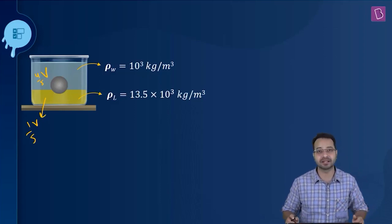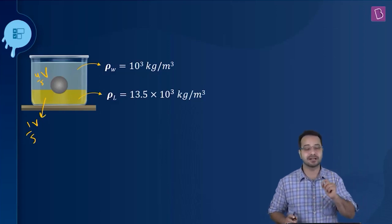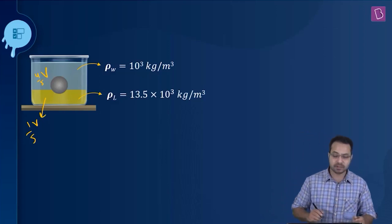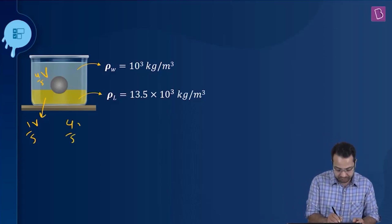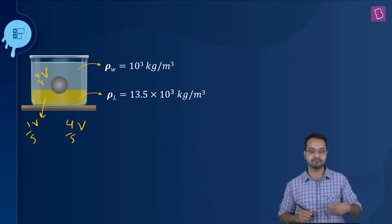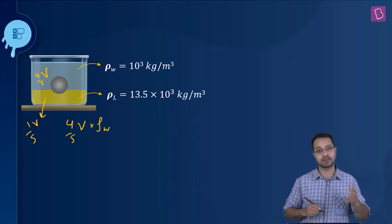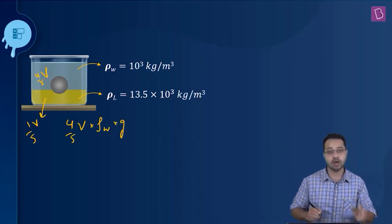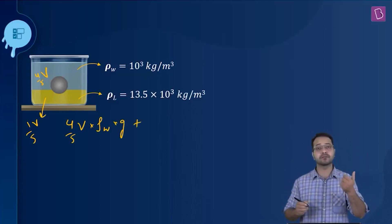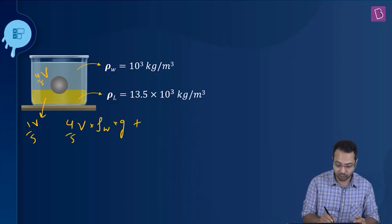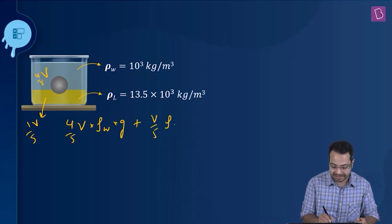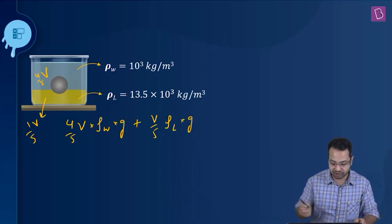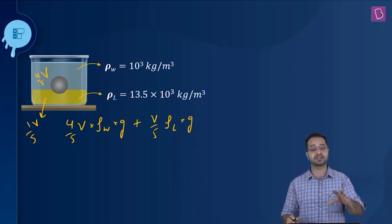Since the sphere is floating, the weight is balanced by the buoyant force, and the buoyant force equals the weight of the liquid displaced. The weight of water displaced is (4/5)V × ρ_water × g, where V is the volume of the solid. The weight of the other liquid displaced is (1/5)V × ρ_liquid × g. These together give the total buoyant force acting on the sphere.